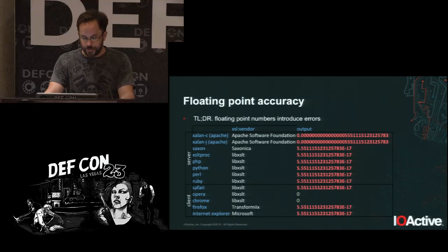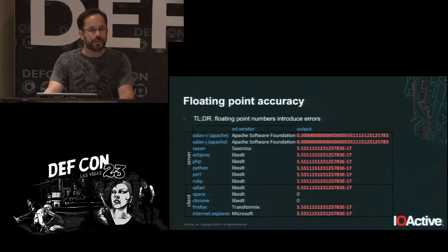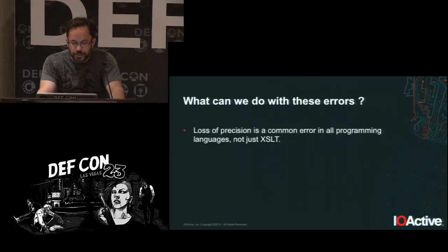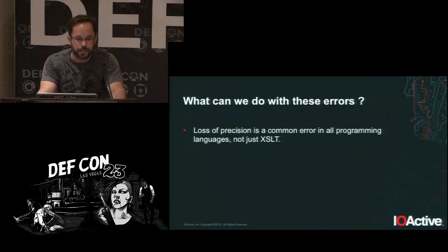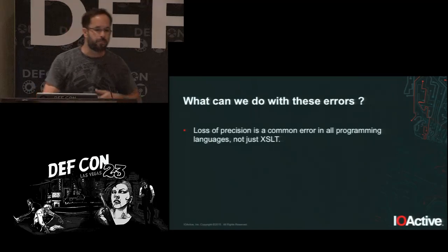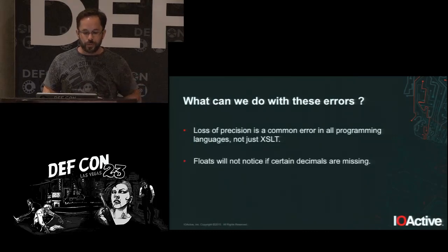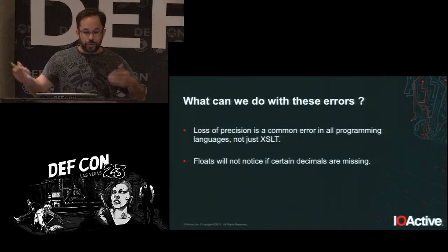This is something present in all programming languages — JavaScript, Perl, Python, C, whatever. Floating point numbers will have certain hanging decimals. These are just numbers that were not properly rounded by the programming language. But it would be better if we do something with this.